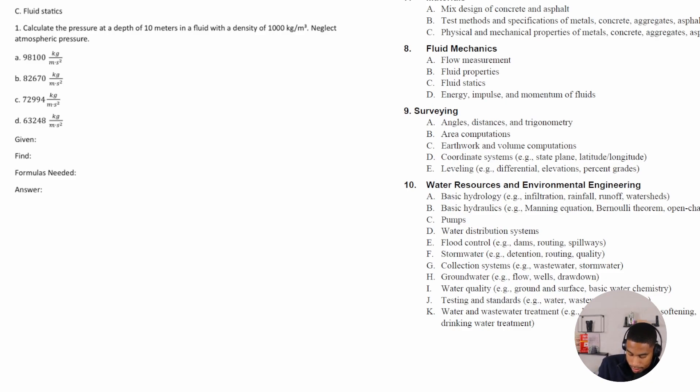All right, so what is the information that we're given? We are given the depth, which is 10 meters. We're also given the density. That's the symbol rho, the density is 1,000 kilograms per meter cubed. All right, and it says neglect atmospheric pressure, or AP.